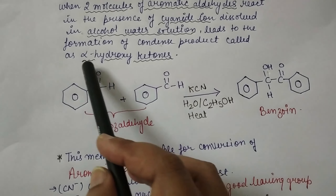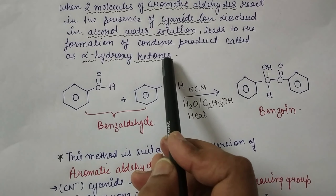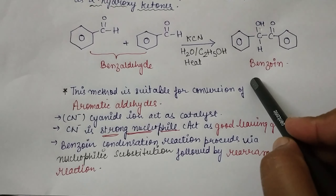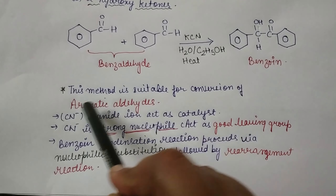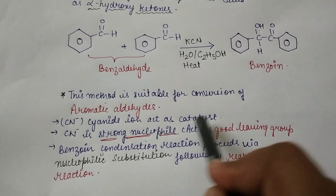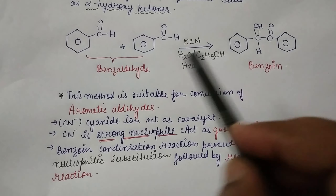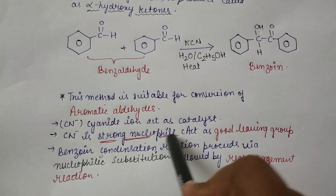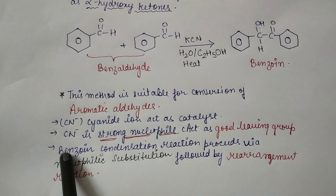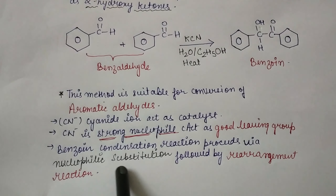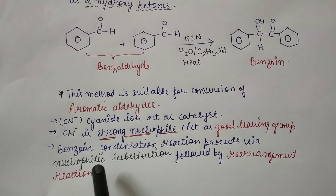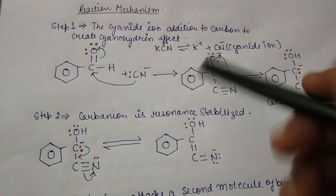This method is suitable for the conversion of aromatic aldehyde. Here you can see this aldehyde group is converted into an alcoholic group. That is why this product is called alpha hydroxy ketone, because two functional groups are present. The carbonyl carbon is there, and because of the presence of a hydroxy group on the alpha carbon, the end product is alpha hydroxy ketone.